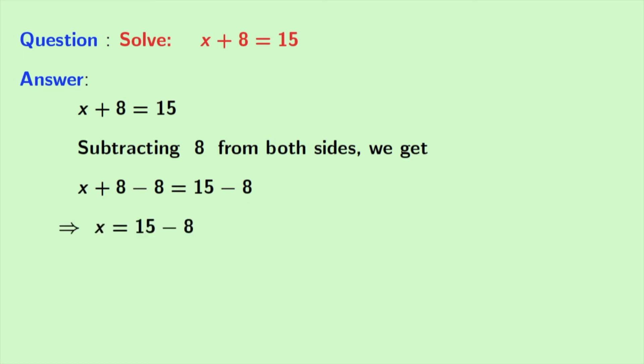Now, after solving, we have x on the left-hand side and 15 - 8 on the right-hand side. And as 15 - 8 equals 7, we have x = 7.